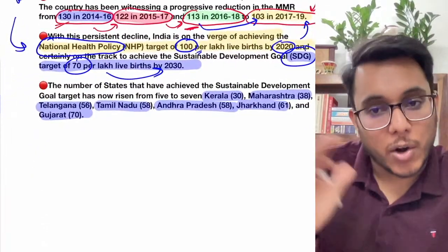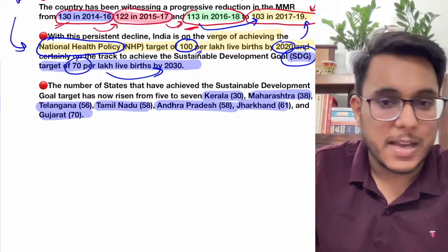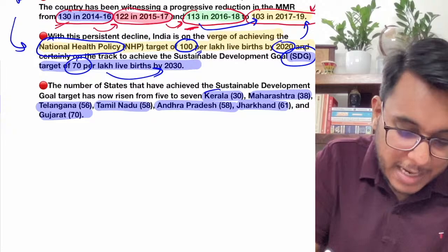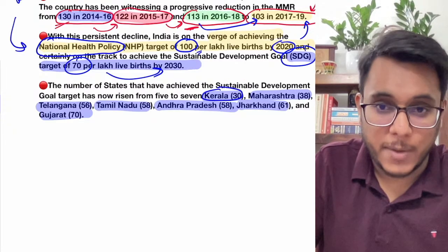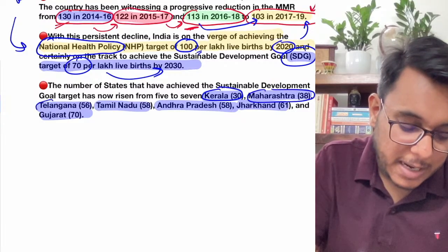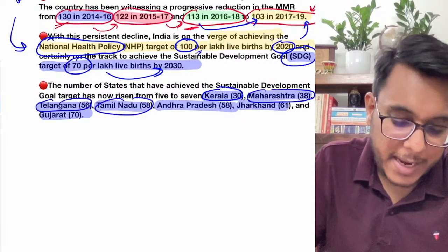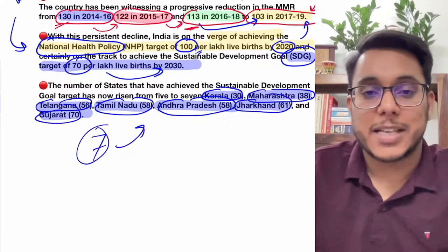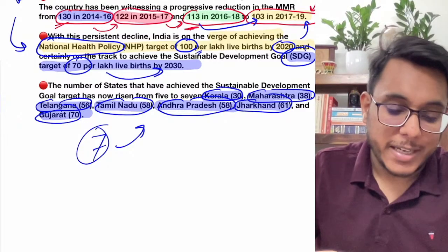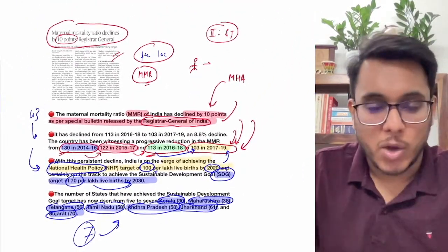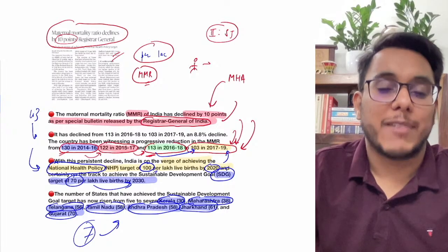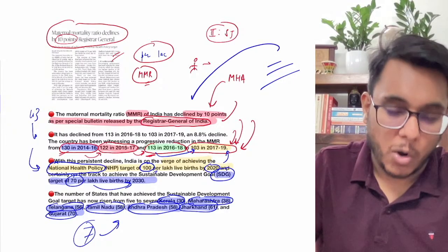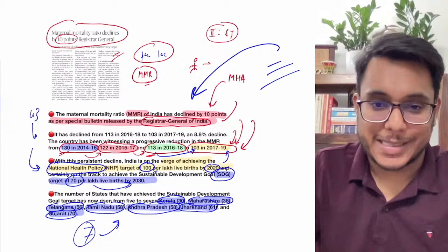Seven states have already met the SDG target of below 70: Kerala has an MMR of 30, Maharashtra 38, Telangana 56, Tamil Nadu 58, Jharkhand 61, and Gujarat 70. We need to ensure this number goes even lower — no mother should die while delivering a child. The change is already positive and this data can be used in your exam answers.